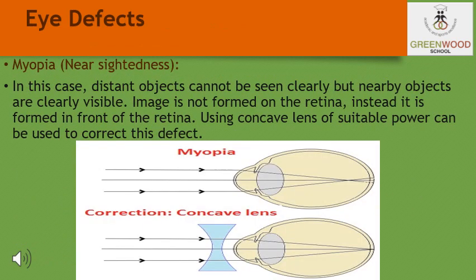Let us discuss the defects of vision and their correction. Sometimes the eye may gradually lose its power of accommodation, and the person cannot see objects distinctly and comfortably — vision becomes blurred due to refractive defects. There are mainly three common refractive defects of vision: myopia or nearsightedness, hypermetropia or farsightedness, and presbyopia. These defects can be corrected by the use of suitable spherical lenses.